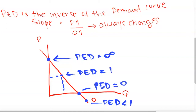It's worth noting that PED is always negative, because an increase in price always results in a decrease in quantity demanded — they always move in opposite directions. However, economists conventionally write PED as a positive number because it is redundant to state the negative sign — everyone knows that when price goes up, quantity goes down.